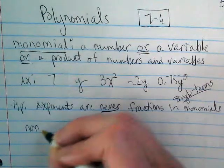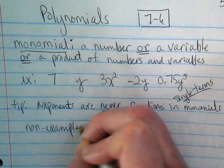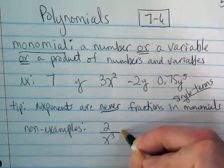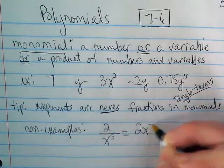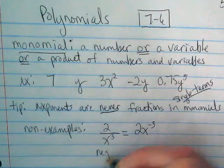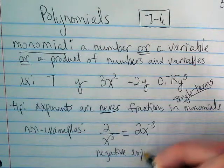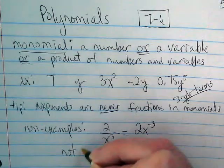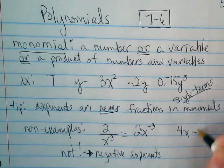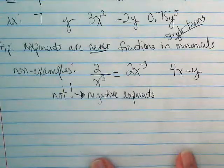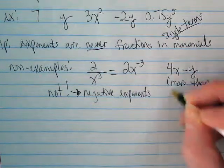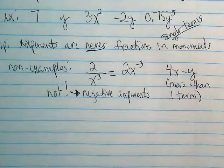Here are some non-examples. Negative exponents are never monomials. And something like 4x minus y is not a monomial. I'm going to move that up so you guys can see a little better. 4x minus y, because this is more than one term. Monomials are single terms.